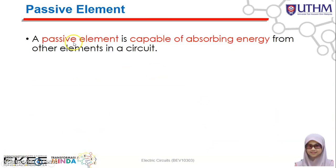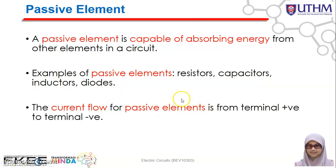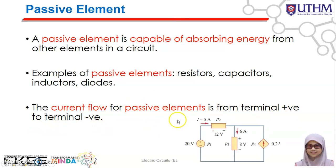A passive element is capable of absorbing energy from other elements in a circuit. Examples include resistors, capacitors, inductors, and diodes. For a passive element, the current flows from the positive terminal to the negative terminal. For example, in this circuit the impedance symbol represents a passive element, and the current — such as 6 amperes — flows from positive to negative terminal.